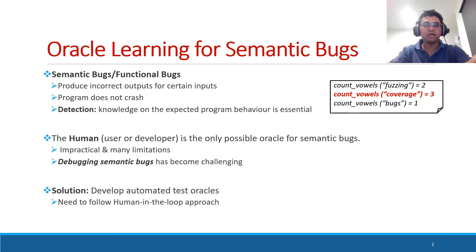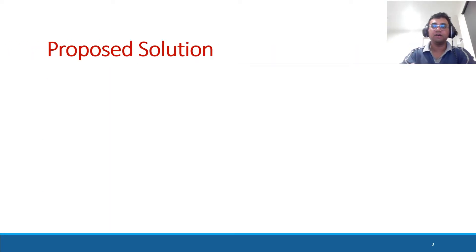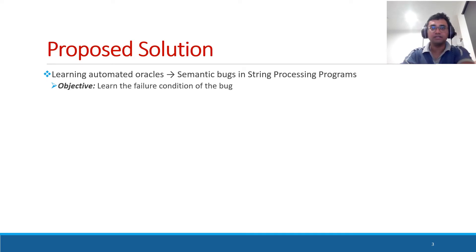The obvious solution is to develop automated test oracles. To do that, we need to follow a human-in-the-loop approach. In this work, we propose a solution to learn automated test oracles for semantic bugs in string processing programs. Here, the objective is to learn the condition under which the bug is exposed or the failure condition of the bug.